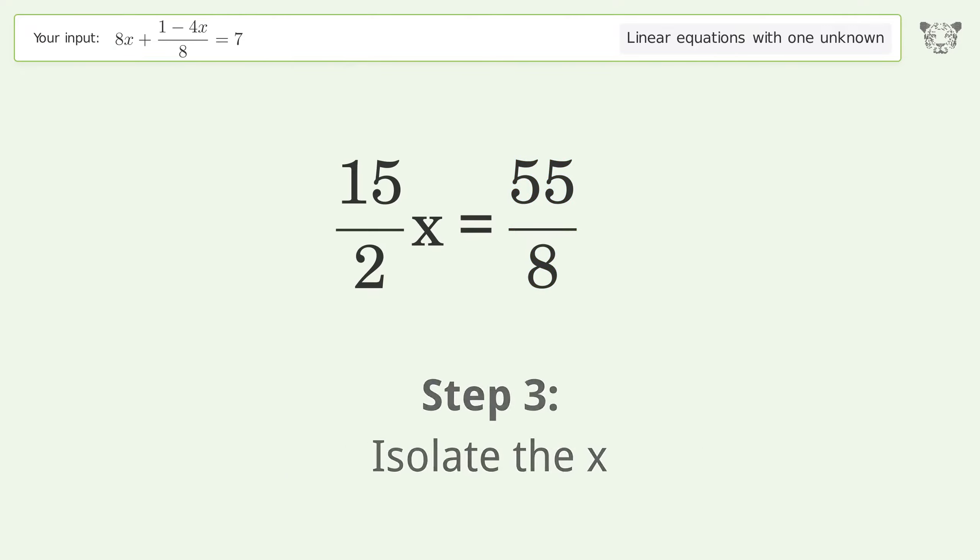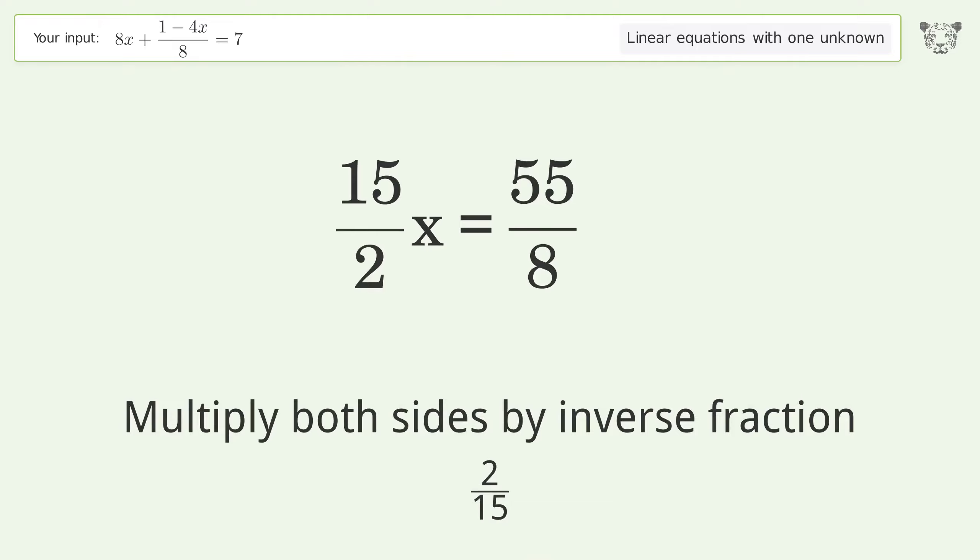Isolate the x. Multiply both sides by the inverse fraction, 2 over 15.